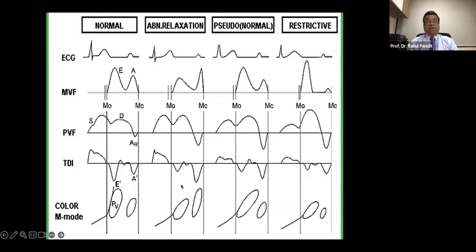My E prime and A prime matches in my in my first stage stage one diastolic dysfunction which is which is fairly easy which is EA reversal here but in my pseudonormal pattern my E wave is taller than A wave here but my E prime is shorter than my A prime here which diagnoses stage two diastolic dysfunction quite well.